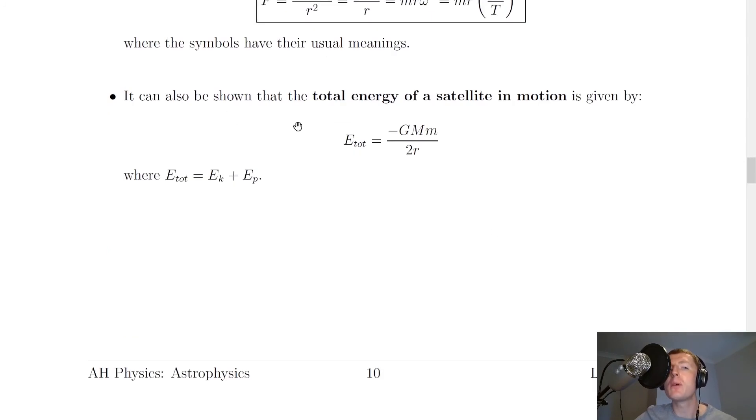Lastly, it can also be shown that the total energy of a satellite in motion is given by E_tot = -GMm/2r, where the total energy equals the kinetic energy plus the gravitational potential energy. You'll show that this is the case in one of the worked examples.